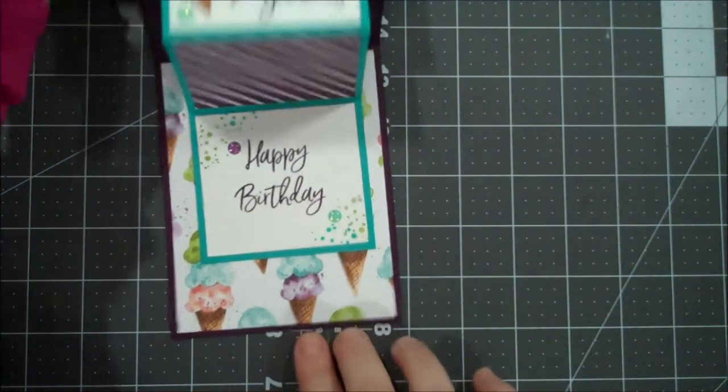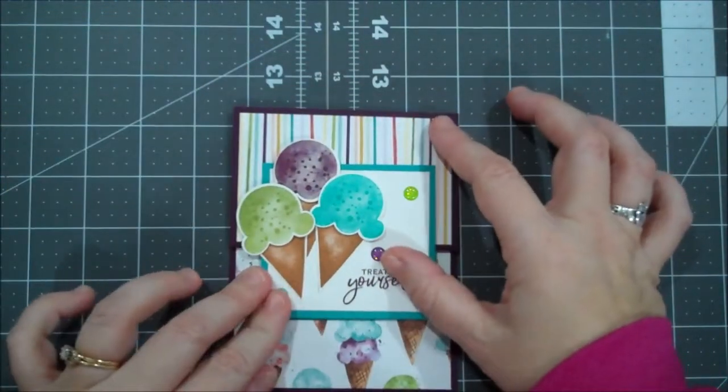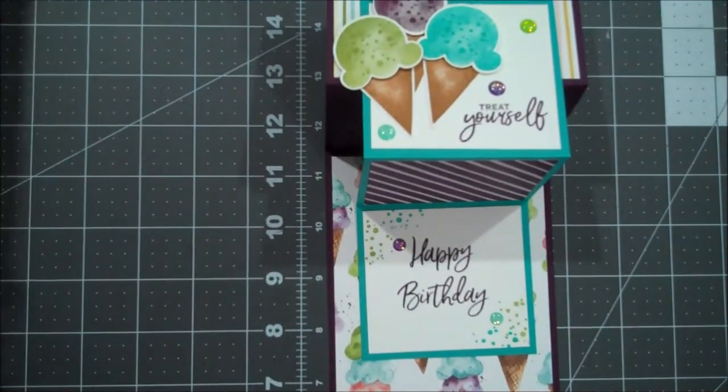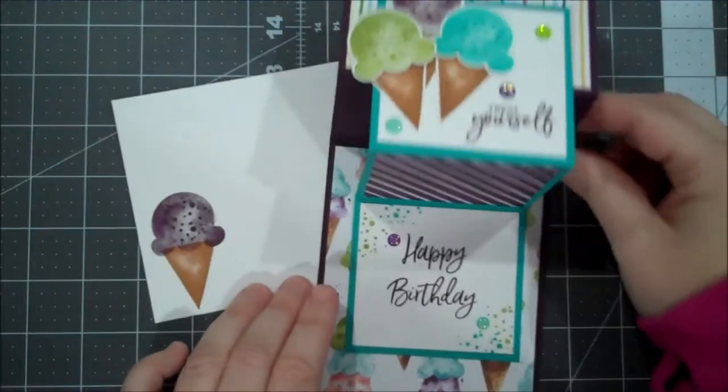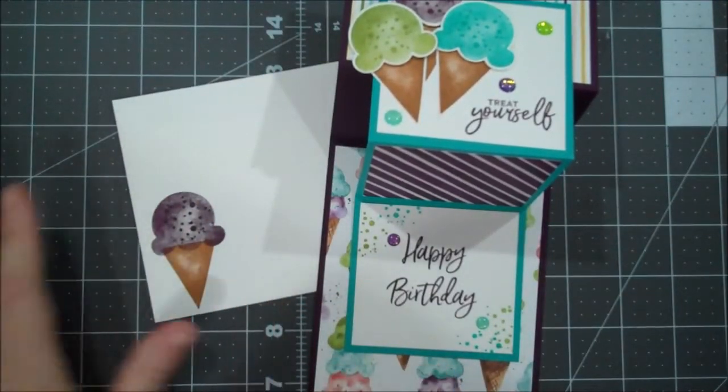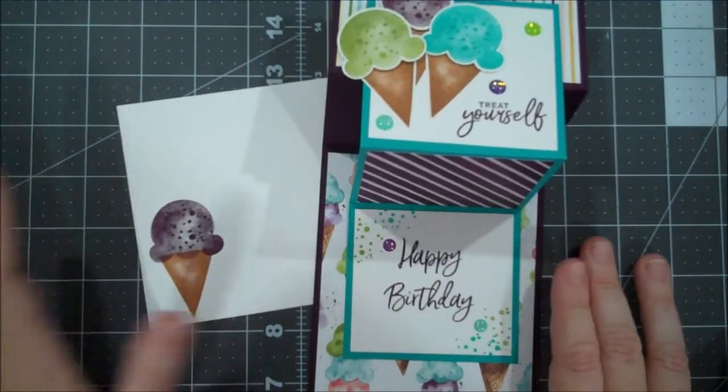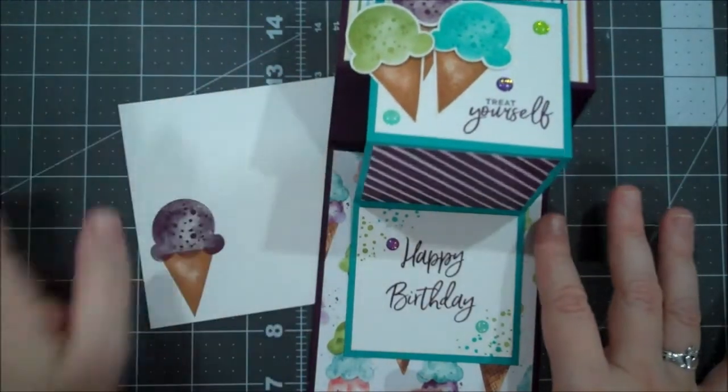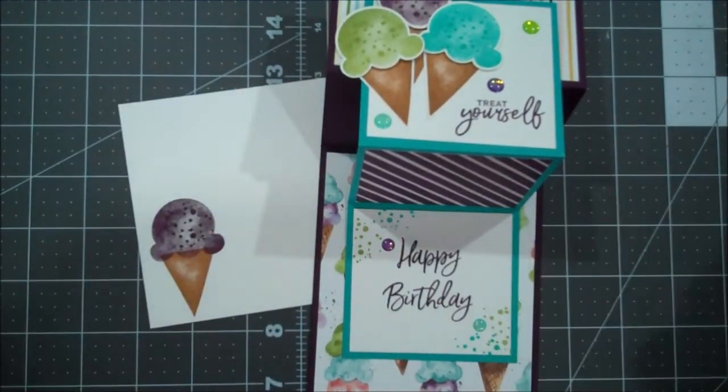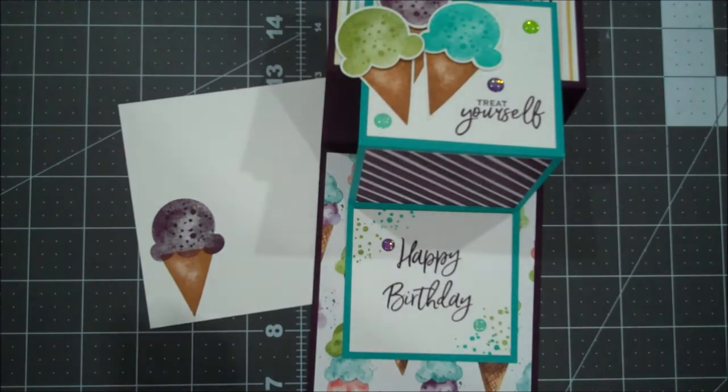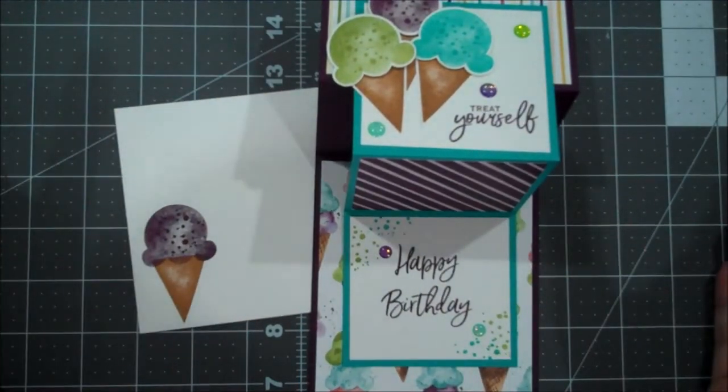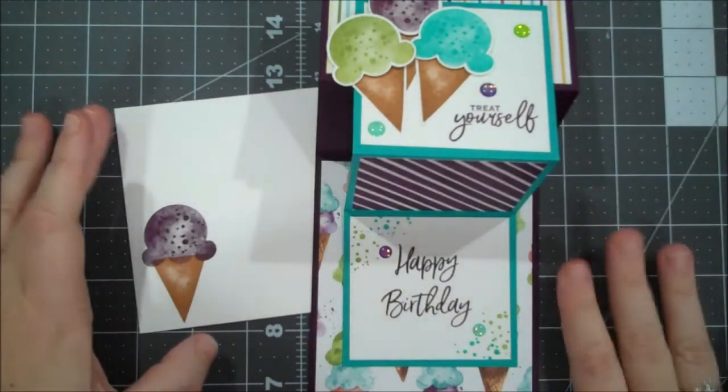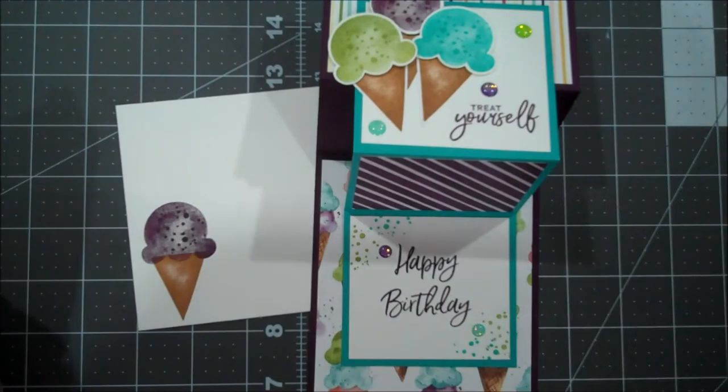So there you go. There is our double Z fold card, featuring the new ice cream suite. And then for my envelope, I just chose one of our medium whisper white envelopes and I just re-stamped the cone just to coordinate. I went with the blackberry bliss rather since I use that as my base, but you could choose whatever color you want. So I thank you so much for watching today. As always, you can find a full supply list in the description of this video and you can pick up all of these products in my online store. And I look forward to being back with you real soon. Thanks again. Bye.